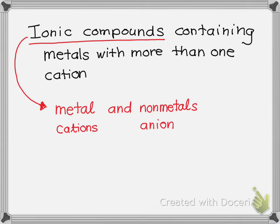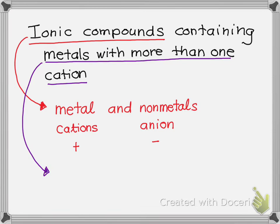Cations have a positive charge and anions have a negative charge. In this particular rule, we're going over the situation when we have a metal that has more than one cation — meaning there are some metals that can form more than one positive charge.